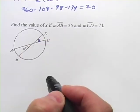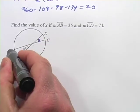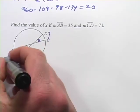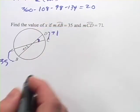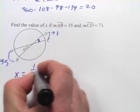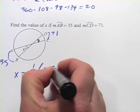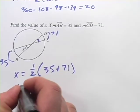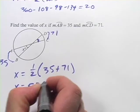It's going to be the average of this arc length and this arc length. So, we're being told AB is 35 and CD is 71. So the average there would be, so x equals one half of 35 plus 71. And let's see, 35 plus 71 is going to be 106.